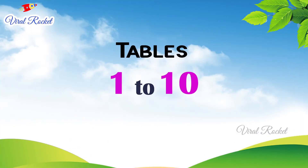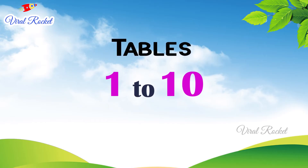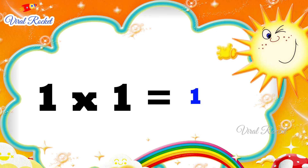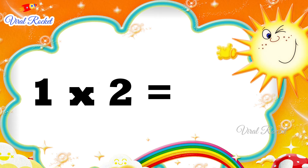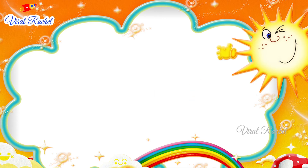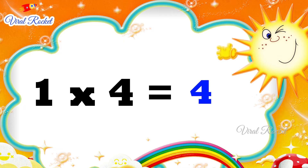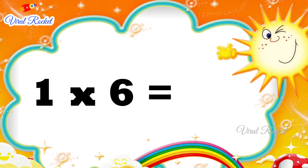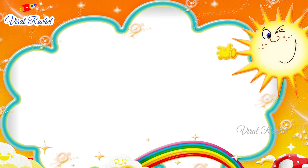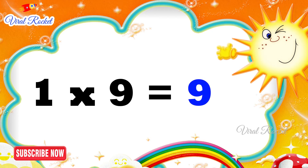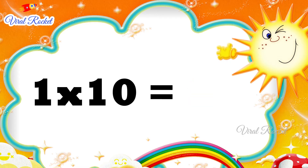Welcome to Viral Rocket channel. In this video we will learn tables. Let's start learning the table of one. One one's are one, one two's are two, one three's are three, one four's are four, one five's are five, one six's are six, one seven's are seven, one eight's are eight, one nine's are nine, one ten's are ten.